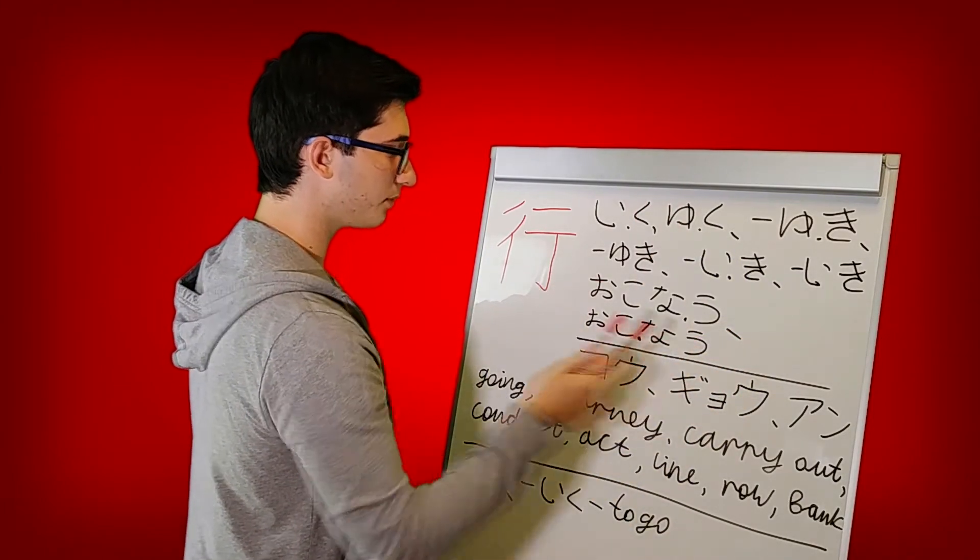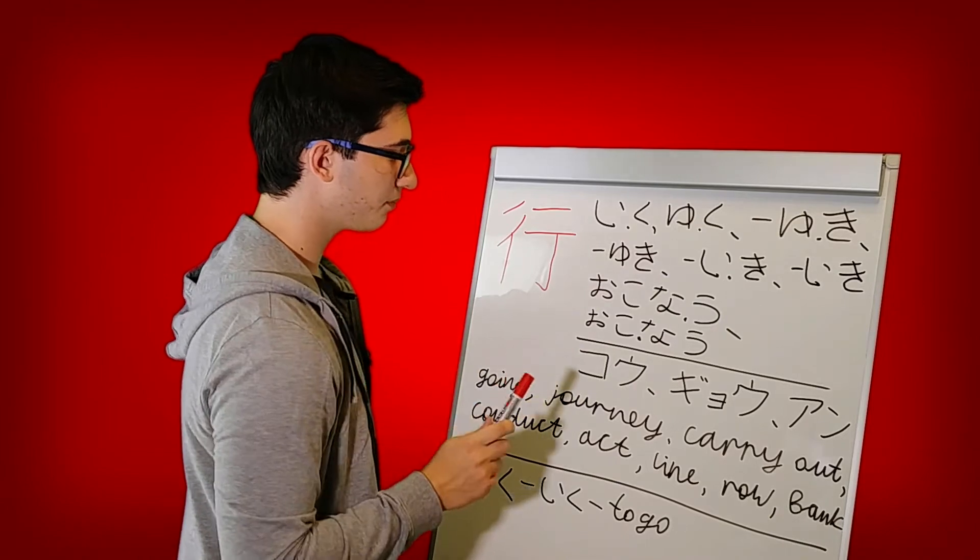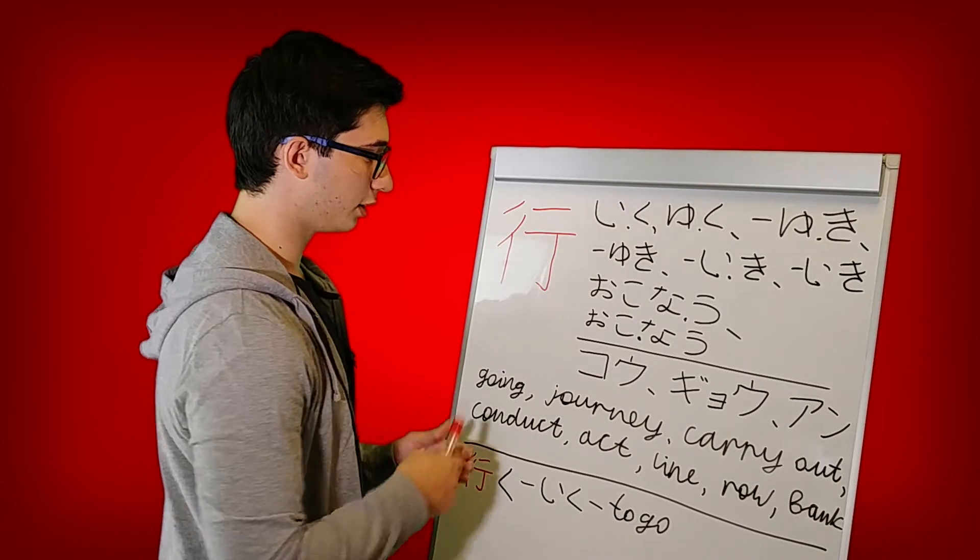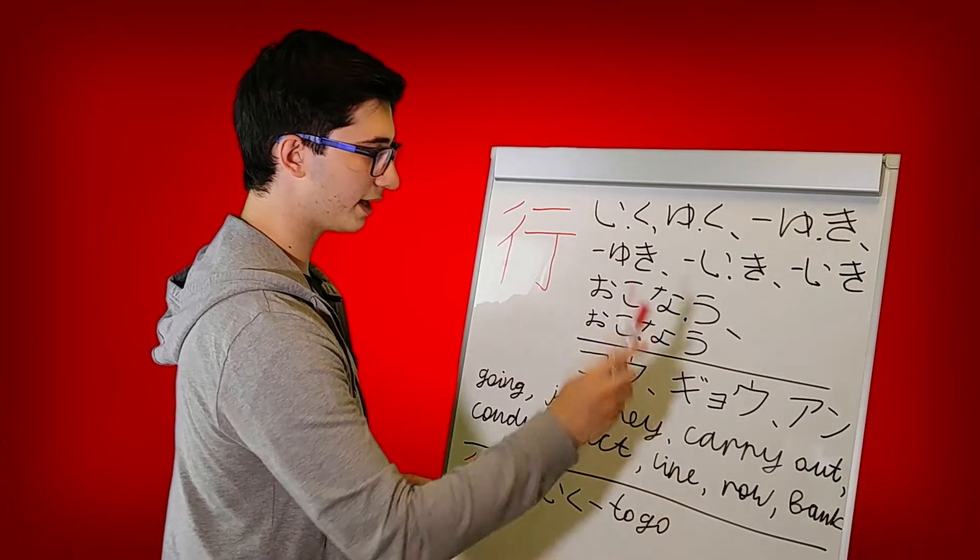Then we have okonau, where u goes outside, and another okonau, but here nao goes outside. And the onyomi are KO, GYO, and AN.